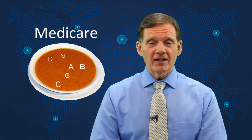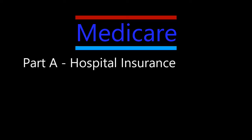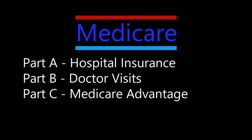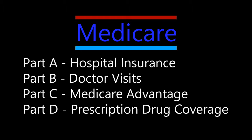When it comes to Medicare, it's like alphabet soup — there are more letters than you can shake a stick at. Part A is hospital insurance. Part B covers doctor's visits. Part C is referred to as Medicare Advantage plans, which cover costs not paid by Parts A and B. And then there's Part D prescription drug coverage.